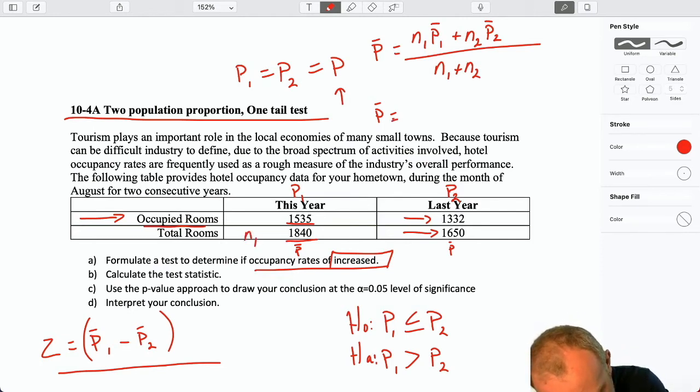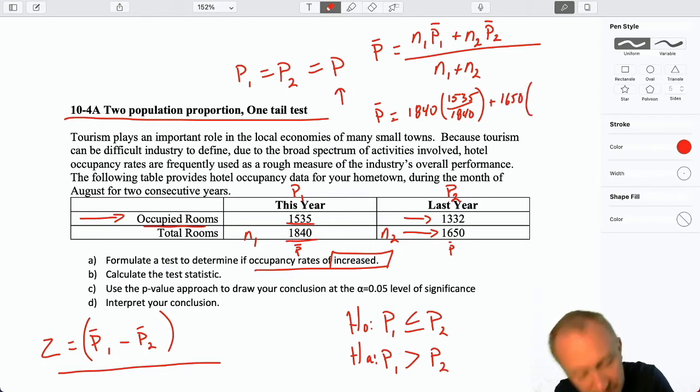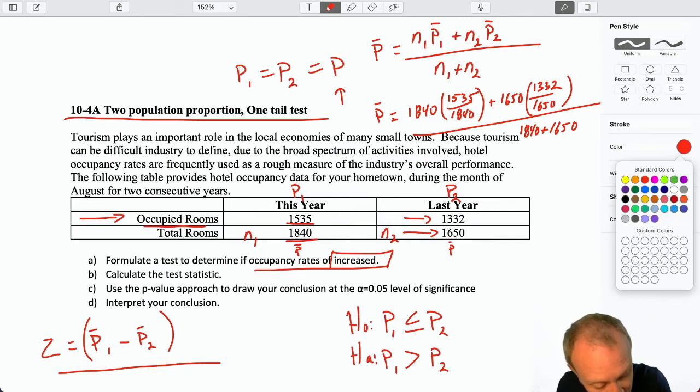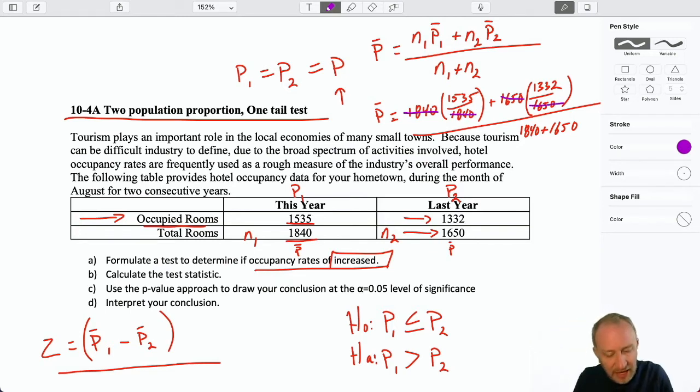Our next one here N2, so that's 1650 times P bar 2, well that would just be 1332 divided by 1650. And then of course we divide that by the total number of observations. What I hope you can see here is that even though I haven't calculated P bar 1 and P bar 2, I don't really need to because when I calculate here that pooled estimator, well here I can see that those are just going to cancel out. And what I'm left with is just 1535 plus 1332 divided by 1840 and 1650.